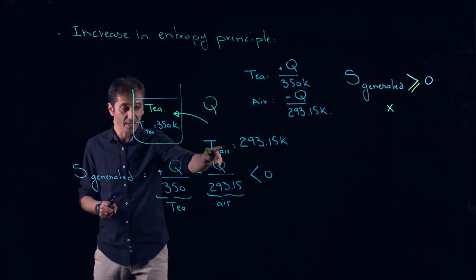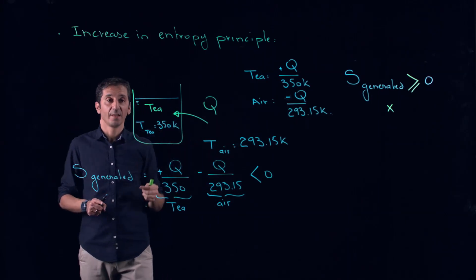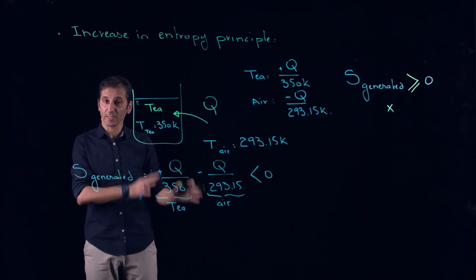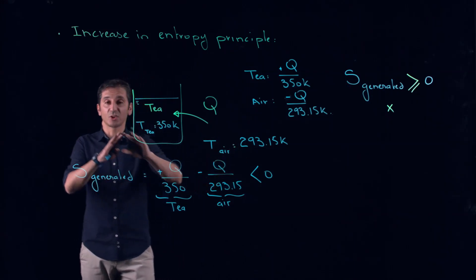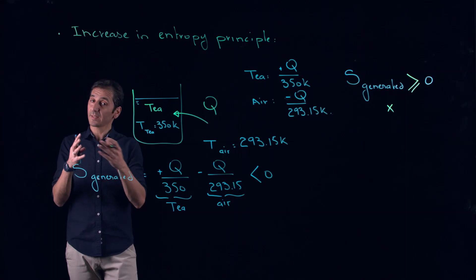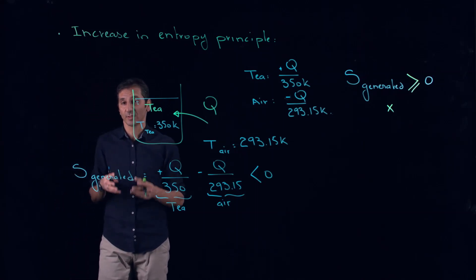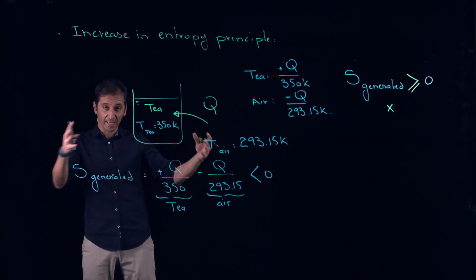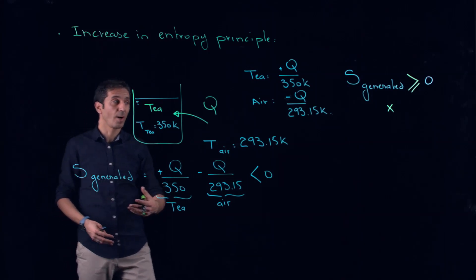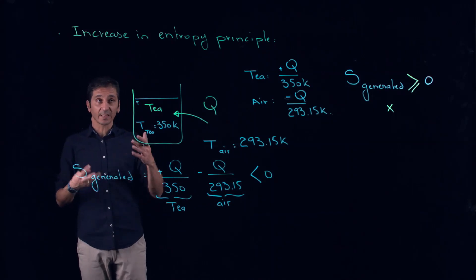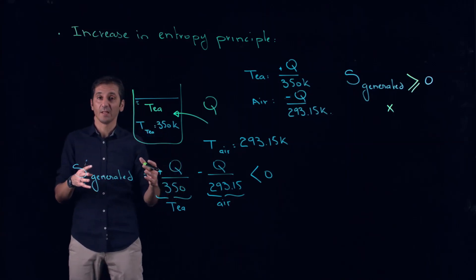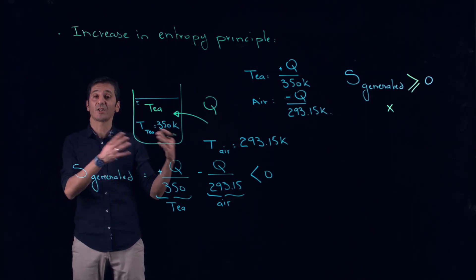You have to be careful: for the air, its entropy decreased because it's losing heat, and the tea's entropy increases — that's fine. We can decrease entropy for a certain component. However, it's S_generated that has to be positive. A hot potato, by cooling down, will decrease its entropy, but the price to pay is the increase in entropy of the surrounding air. The overall change must lead to a positive sign for the process to be possible. Thanks to this increase in entropy principle, we can now explicitly and quantitatively explain why some processes are possible and others are not.